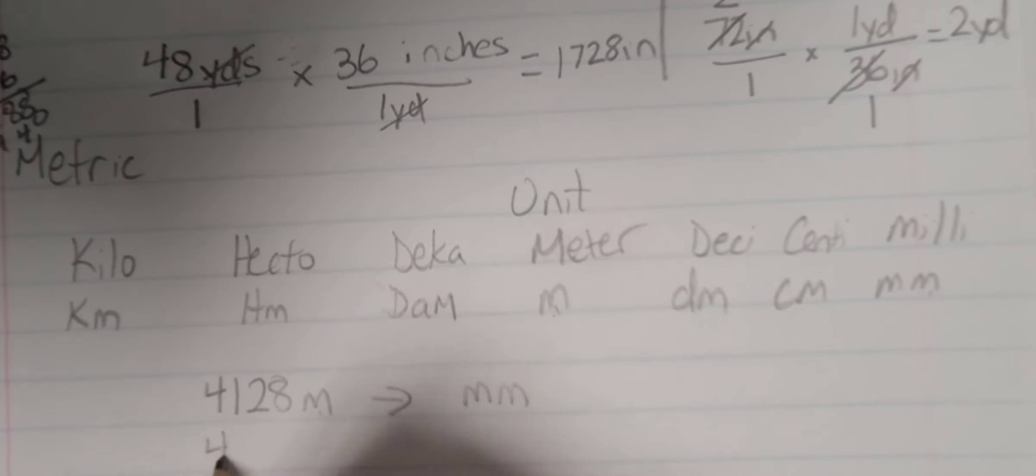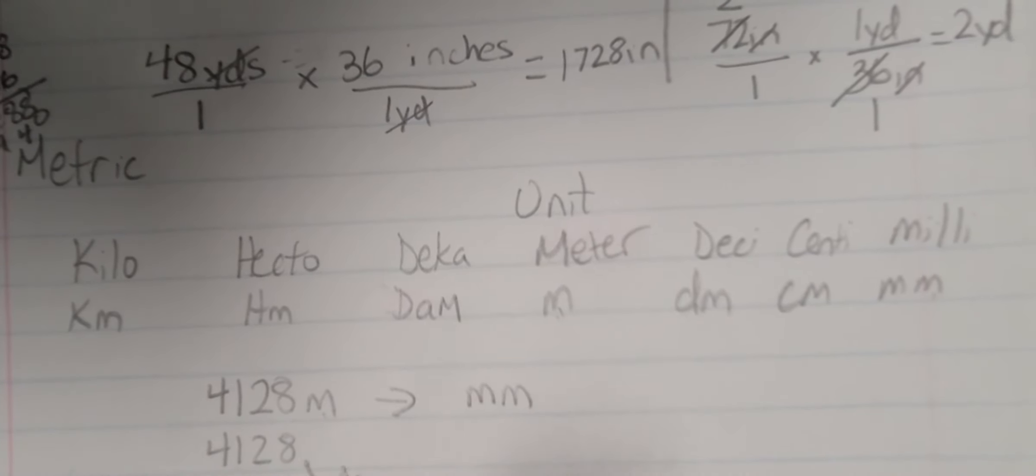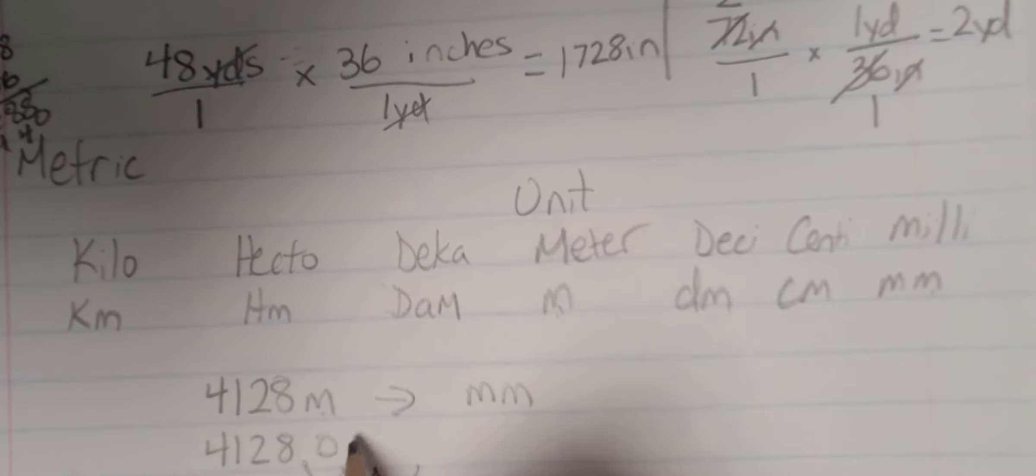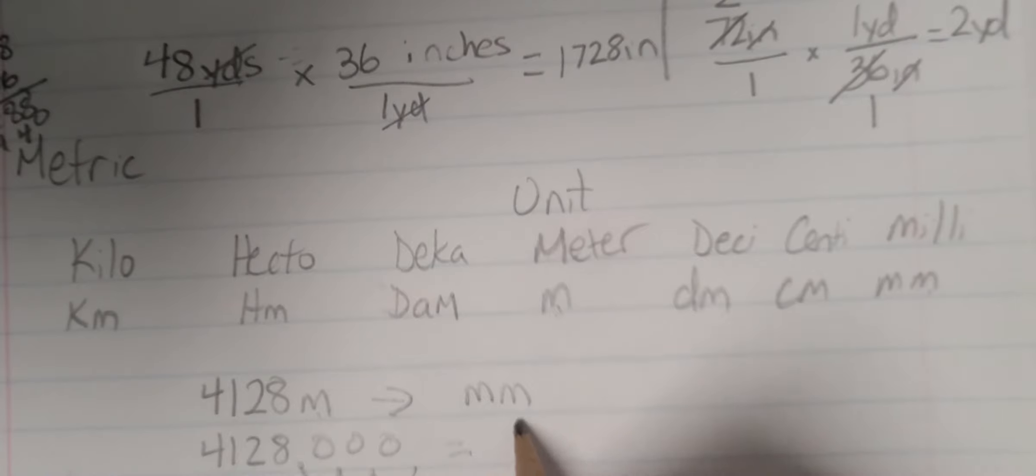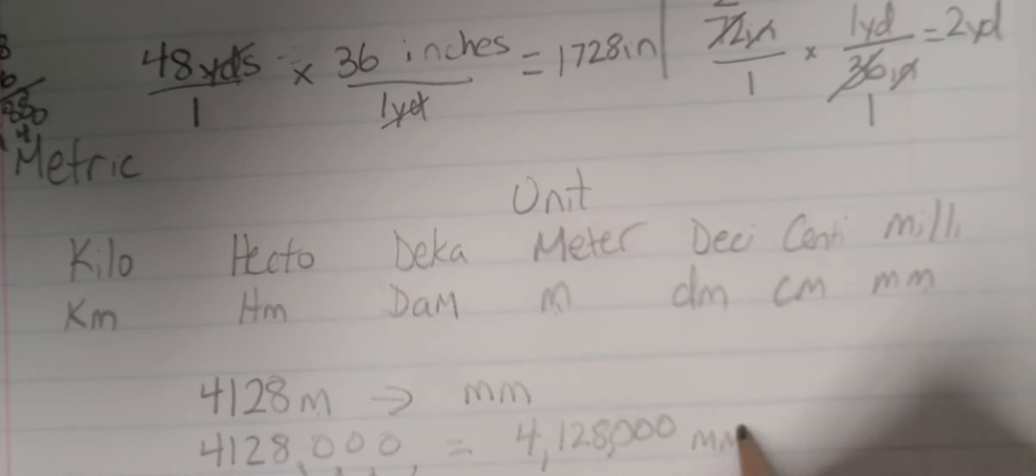So I take my 4,128, and I take my decimal, and I move it 1, 2, 3 spaces away. I annex some zeros, so I add some zeros in, and then I write the number again. So we get 4,128,000 millimeters.